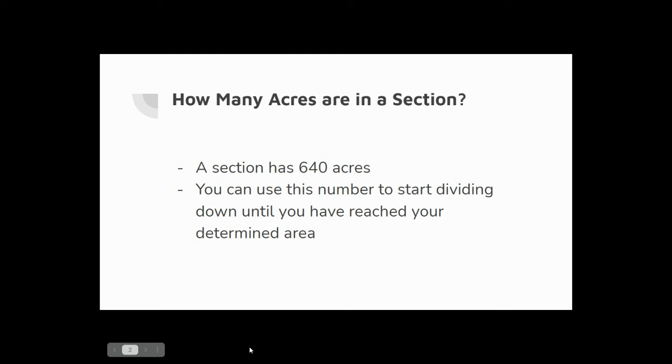So the first thing that we need to know is we're basing all of this legal land description off of a section. We measure everything in sections, and a section of land is 640 acres. So we're starting with a little bit of numbers, and this does include both being able to write it and being able to calculate how many acres it is. But an entire section is 640 acres, and we'll look at what a section is going to look like on our paper. From that number, you can then start dividing down until you have reached your determined area, and this will make more sense as we go through this, but knowing from the beginning that 640 acres is a section is a really good starting point.